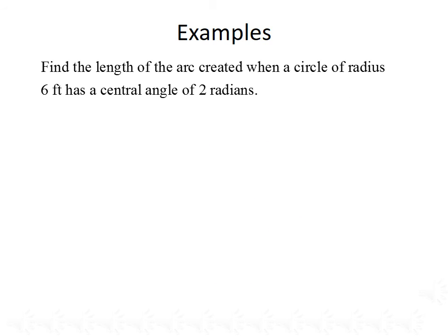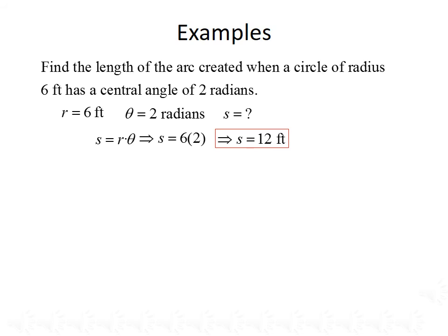Let's look at a couple of examples dealing with arc length. First, we want to find the length of the arc created when a circle of radius 6 feet has a central angle of 2 radians. R equals 6 feet, theta equals 2 radians, and we're solving for arc length S. Using S equals R times theta, we plug in: S equals 6 times 2. Simplifying, S equals 12 feet.